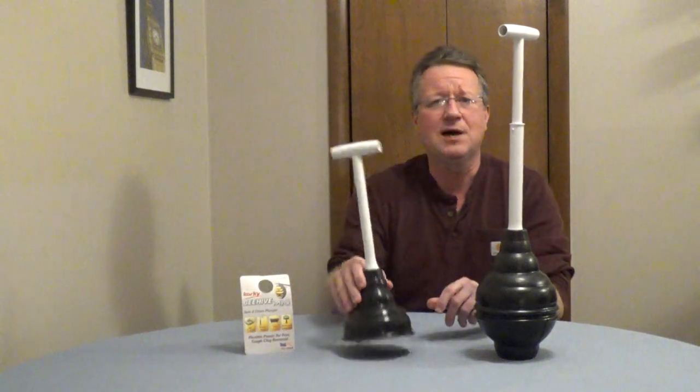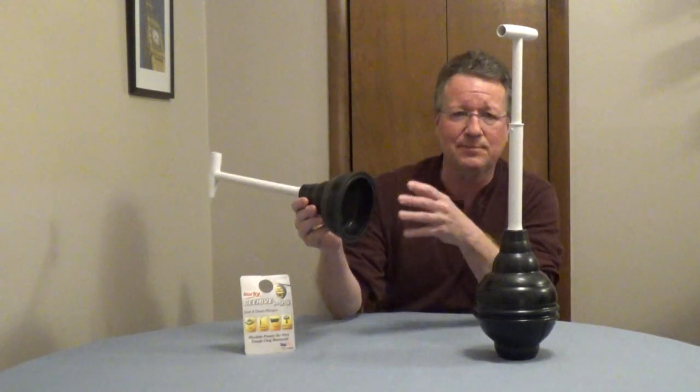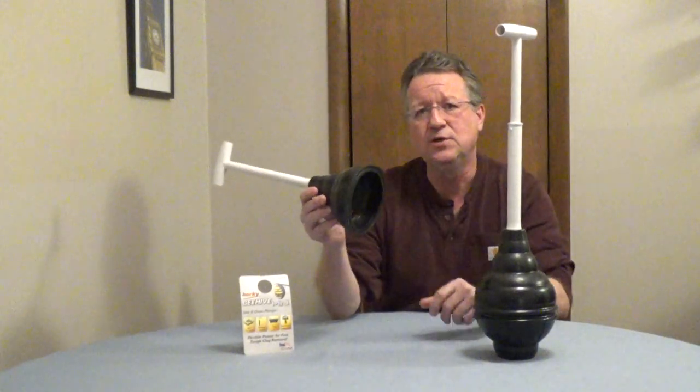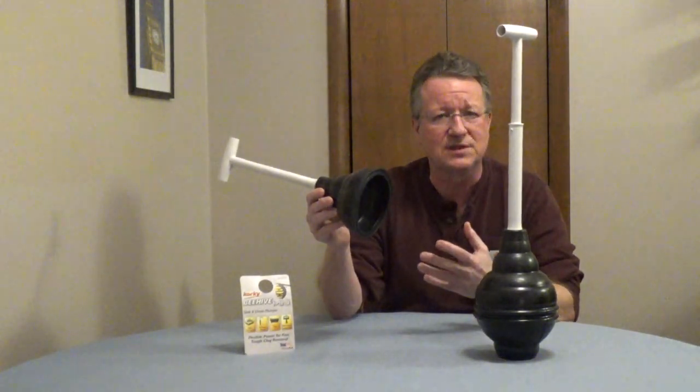For tubs, showers and sinks, you'd want a cup-style plunger and this works on flat surfaces. You wouldn't use this on a toilet because it wouldn't seat properly.